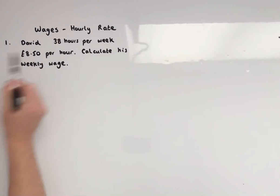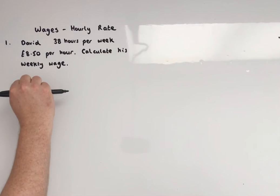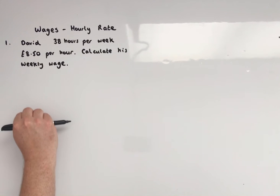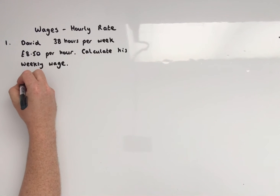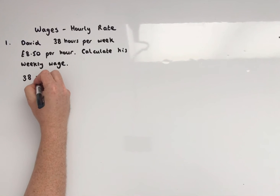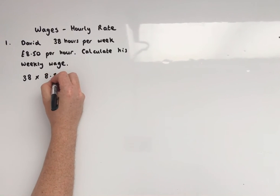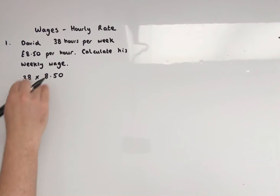Okay, so every hour he is getting £8.50, so we could if we wished do a tower sum £8.50, 38 of them, and then add vertically. Knowing that multiplication is repeated addition, then we know that the sum that we need to calculate is 38 times £8.50. Now if we were to set that up as a tower sum with that decimal point here we could run into some problems.